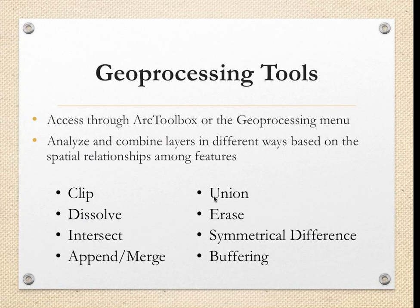Here is an example of an attribute table. This table displays all the information behind each spatial data point, and this attribute data can be manipulated and mapped using different geoprocessing tools. I will now pass the presentation to Michaela, and she will talk about some of the geoprocessing tools available to manipulate data.